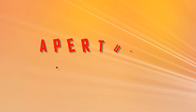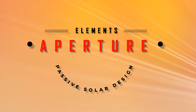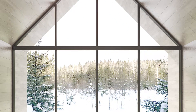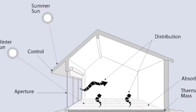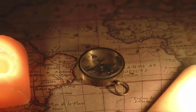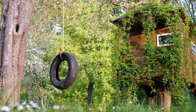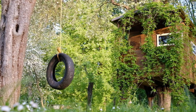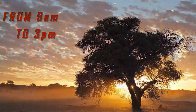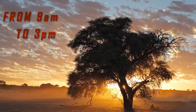Number one: Aperture, otherwise described as a collector. It is a large glass area through which sunlight enters the building. Typically the aperture should face within 50 degrees of true south and should not be shaded by other buildings or trees from 9 am to 3 pm each day during the heating season.